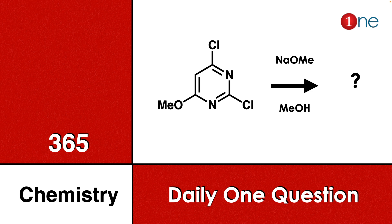Welcome to One Chemistry. This is the 365 Chemistry Series — daily one question for you. A pyrimidine analog is given; you are attaching two chlorine atoms and one methoxy group. You are reacting with sodium methoxide and methanol. You have to find where the reaction will occur.